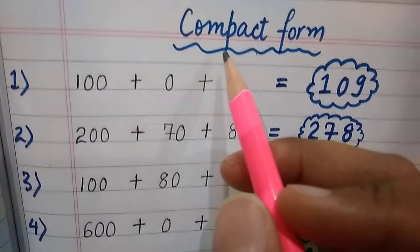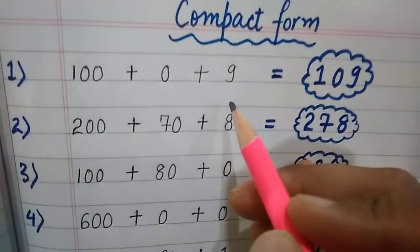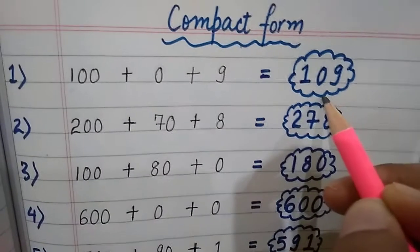Short form. These numbers will be given and you will make them compact form. How do we make the compact form?